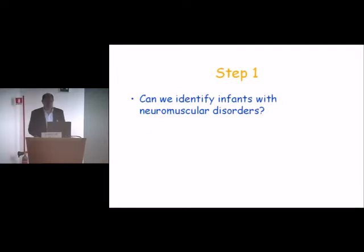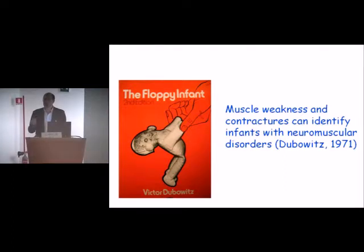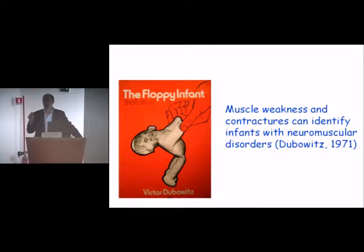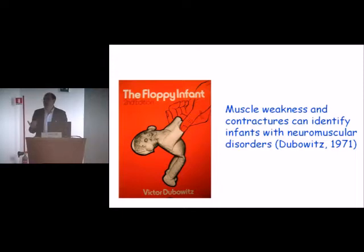The first step is trying to identify infants with neuromuscular disorder. In real practice, this seems a hard task, but it's actually very simple. You have to ask yourself one simple question: is the child weak or not? Dubowitz in 1971 made a very simple statement — you can identify a child with neuromuscular disorders if the child is weak, and especially if the weakness is associated with contractures. But the next thing is how do you define weakness in a baby?